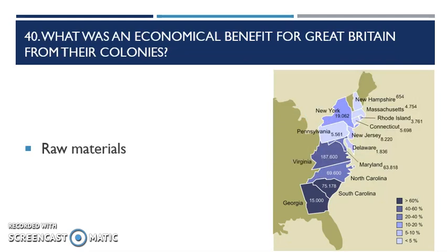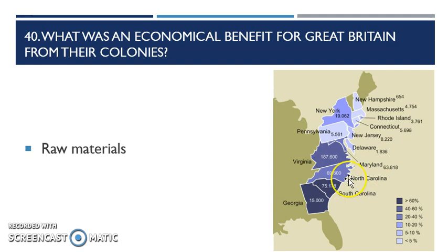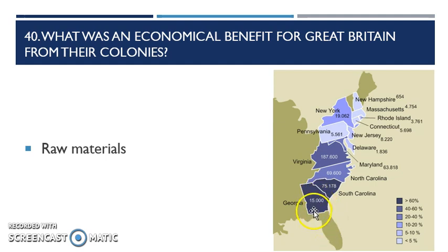Question 40: what was the economic benefit for Great Britain from their colonies? Raw materials. These southern colonies — this shows slave numbers, how many slaves they had. The reason they have so many slaves is they're making large plantations of 500 to 600 acres or more, and they need 100-plus workers. Virginia had almost 188,000 slaves. North Carolina, the poorer colony, had around 70,000. South Carolina is becoming a jewel — it has the port of Charleston, and grows rice and indigo, which are big crops. Georgia was set up as a buffer, a speed bump for the Seminoles and the Spanish. This is where their money is coming from.